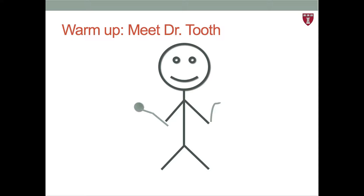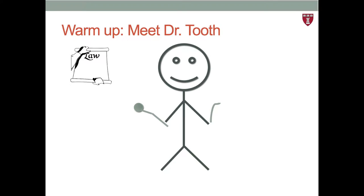So let's brainstorm. What does Dr. Tooth need to practice? Well, to start: a license to practice, a defined scope of practice, and policies in place that allow Dr. Tooth to provide oral health care. All of these things fall into the category of a leadership and governance structure around providing healthcare services.